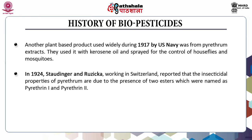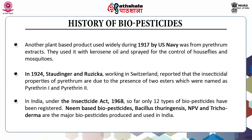In 1924, Staudinger and Ruzicka, working in Switzerland, reported that the insecticidal properties of pyrethrum are due to the presence of two esters, which were named as pyrethrin-1 and pyrethrin-2. In India, under the Insecticide Act 1968, only 12 types of biopesticides have been registered. These include neem-based biopesticides, Bacillus thuringiensis, NPV and Trichoderma, which are the major biopesticides produced and used in India.